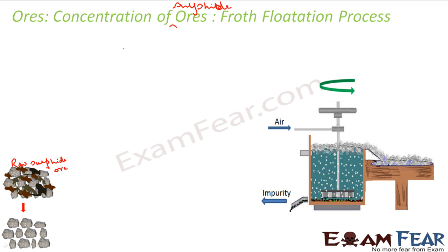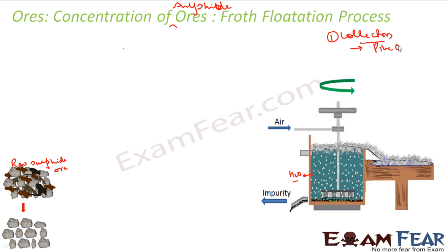The process starts with the raw sulfide ore. We powder it and then mix it with water. The sulfide ore becomes wet when mixed in water, but we don't want it too wet, so we add collectors. Collectors enhance the non-wettability of the sulfide particles. Examples of collectors are pine oil and fatty acid.